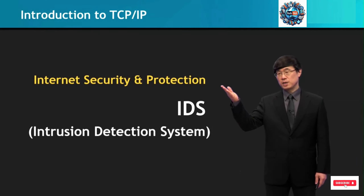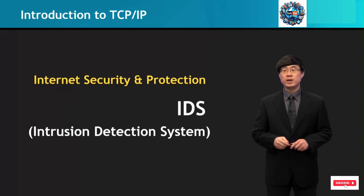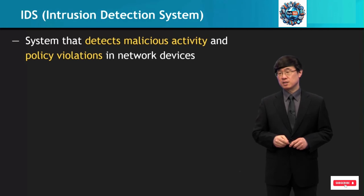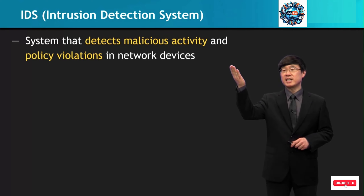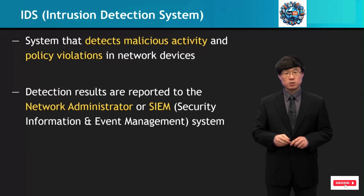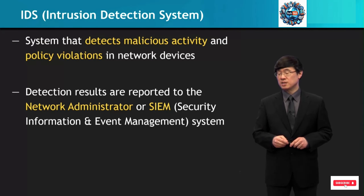Now let's look into internet security and protection. We'll start off with intrusion detection systems. An IDS, an intrusion detection system, is a system that detects malicious activity and policy violations in network devices. The detection results are reported to the network administrator or the SIEM, which is the Security Information and Event Management System.